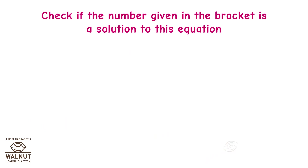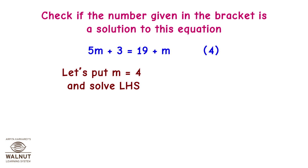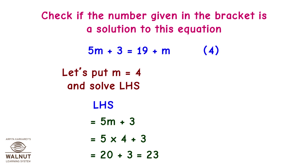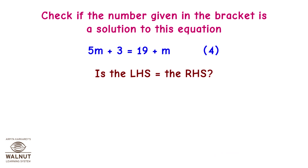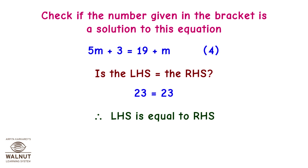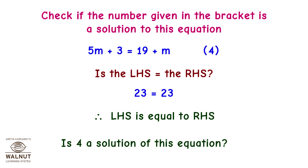Consider another equation: 5m plus 3 equals 19 plus m, bracket 4. LHS equals 5m plus 3 equals 5 into 4 plus 3 equals 20 plus 3 equals 23. RHS equals 19 plus m equals 19 plus 4 equals 23. Is LHS equal to RHS? 23 equals 23, therefore LHS equals RHS. Is 4 a solution? Yes.